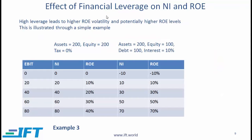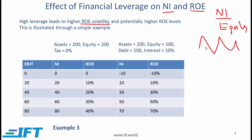Now we consider the effect of financial leverage on net income and return on equity. Remember, ROE equals net income divided by equity. High leverage leads to higher ROE volatility — that is, greater changes in ROE — and potentially higher ROE levels. Consider two companies: Company A is 100% equity financed, with equity of 200 and assets of 200, no debt. For simplicity, there are no taxes.